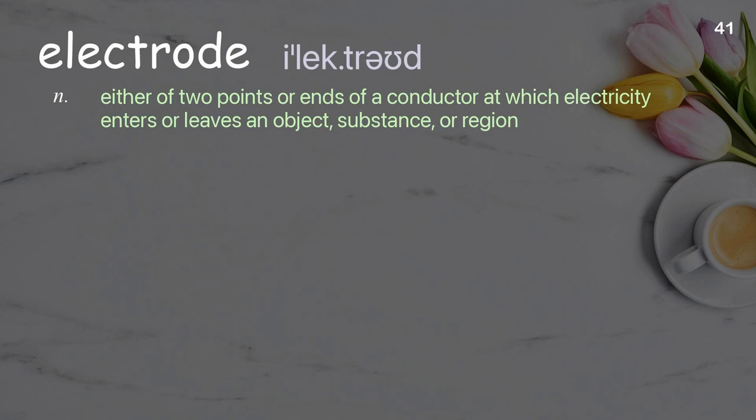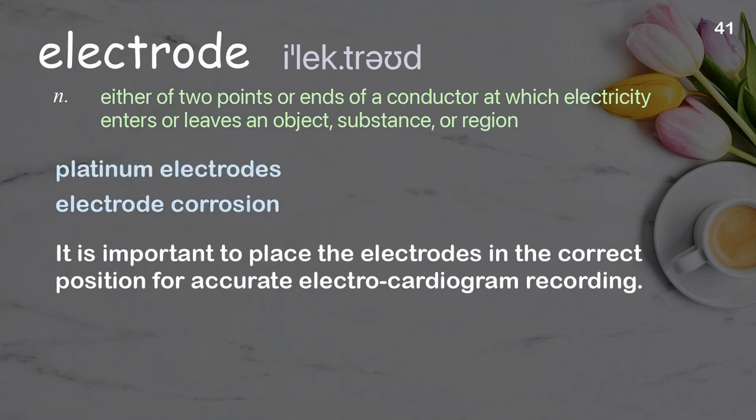Electrode: either of two points or ends of a conductor at which electricity enters or leaves an object, substance, or region. Examples: platinum electrodes; electrode corrosion. It is important to place the electrodes in the correct position for accurate electrocardiogram recording.